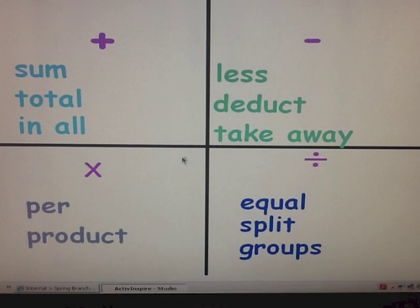What I'd like for you to do is go ahead and pause the video. On your notes, make a table with four squares. Put addition, subtraction, multiplication, and division in each square and come up with as many words as you can that mean each operation. Once you've finished, resume the video.